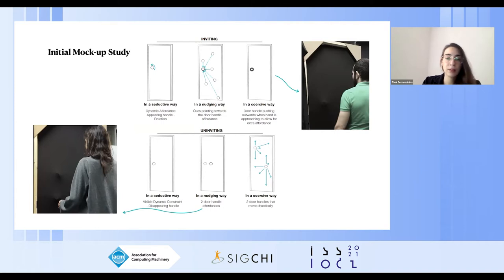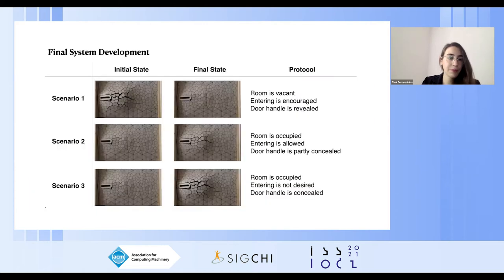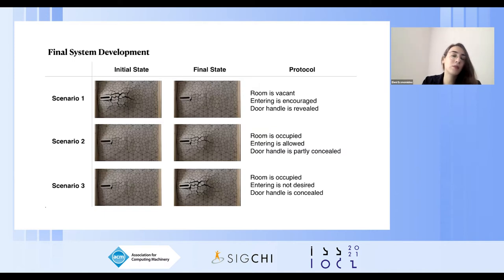For the evaluation, we invited 16 design students to observe and interact with the other side of the door panel and express what they had experienced. From the findings we deduced that the shape-changing speed and form seemed to have a positive effect on the experience, and that the students were able to distinguish between an invitation, a permission, and a prohibition behavior.